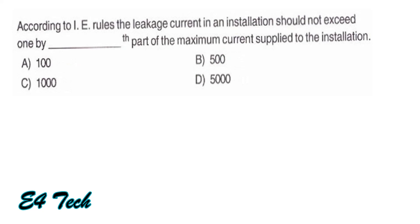According to IE rules, the leakage current in an insulation should not exceed 1 by 5000 part of the maximum current supplied to the installation. That is option DN.